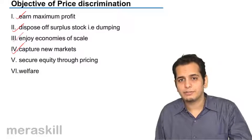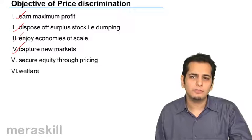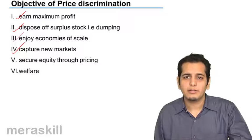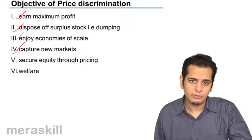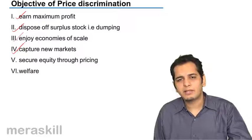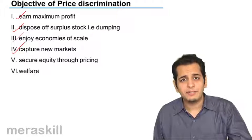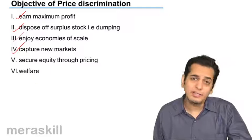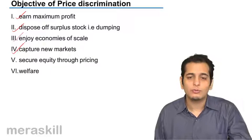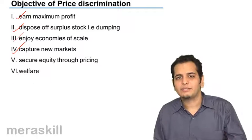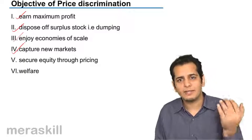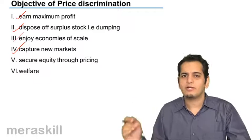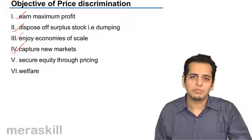Next, capture new markets. It's very possible that the monopolist might sell the product at a very low rate in a market where he is not yet present — just to penetrate into that market. He might sell the product at a very low rate there, yet continue to sell at higher rates in existing markets. So he discriminates in prices, selling at higher rates where he already has a big market share and at low prices where he wants to capture market share.